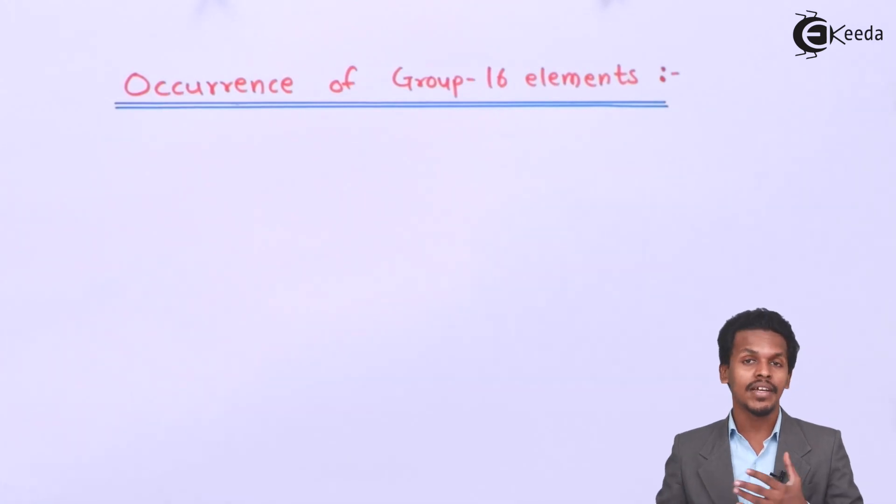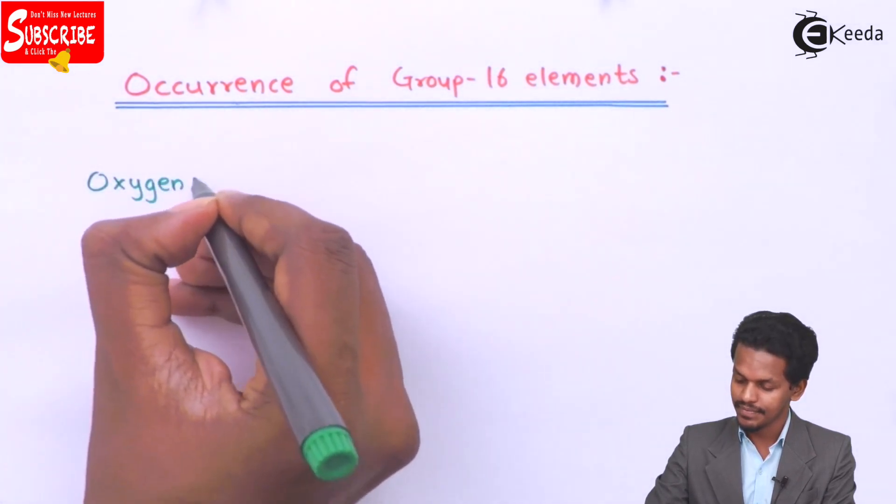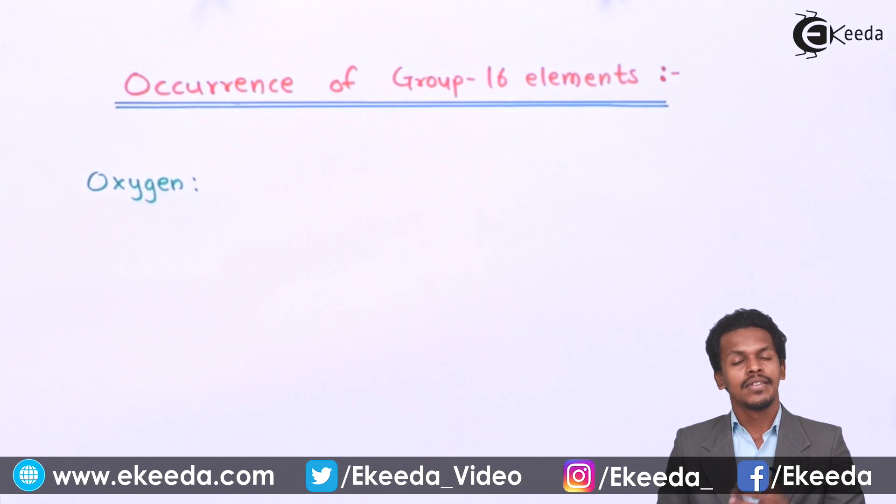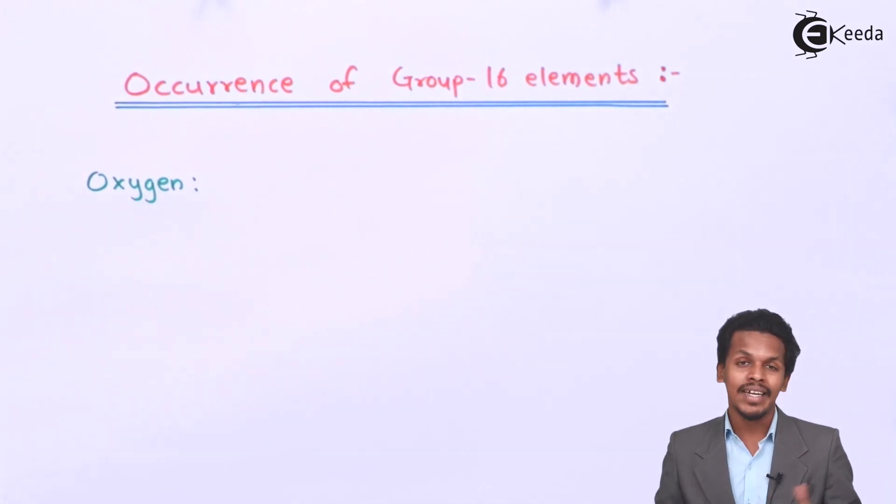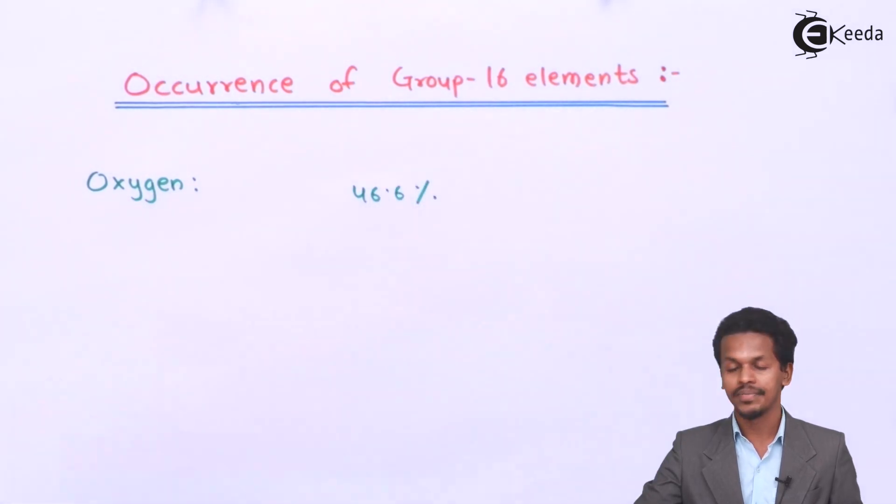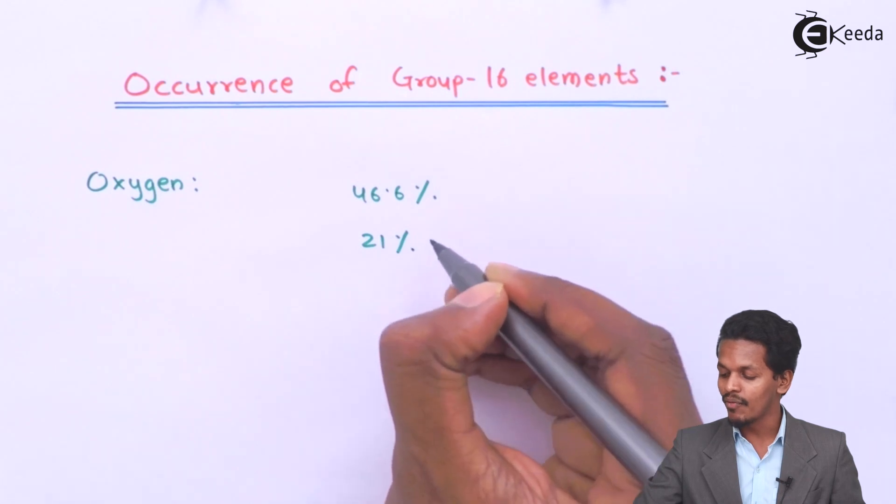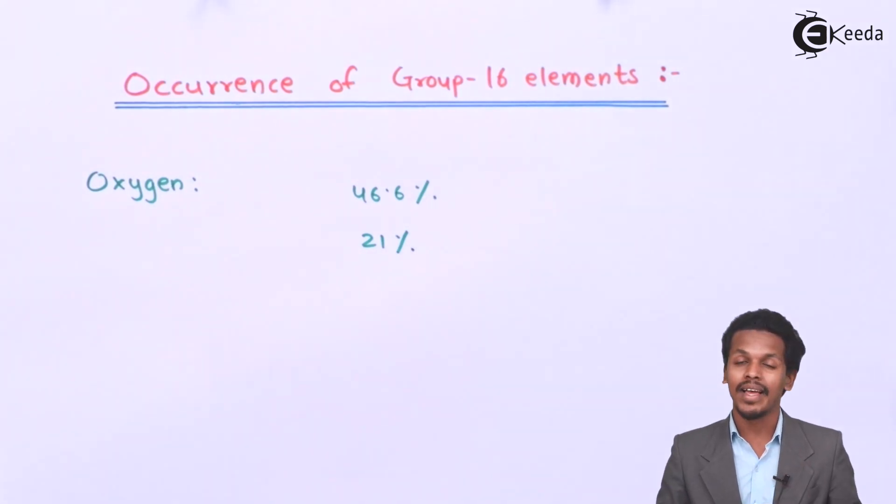Now I am going to talk about the occurrence of Group 16 elements, starting with the first one, oxygen. Oxygen is the most abundant element on Earth, around 46.6% by mass of Earth's crust is covered with oxygen. And if we talk about air, 21% by volume of air is covered by oxygen. This is the abundance of oxygen and this is what we can find everywhere.